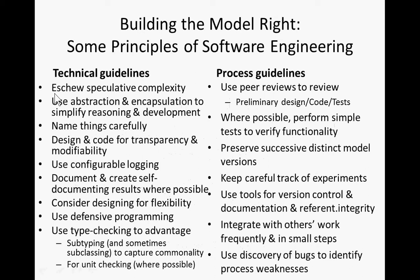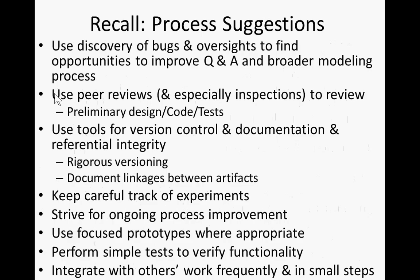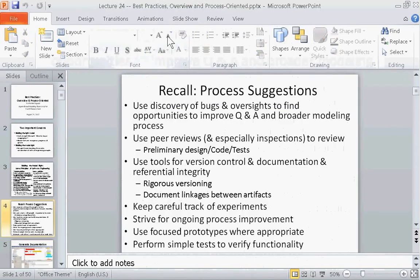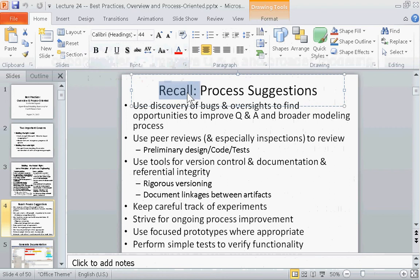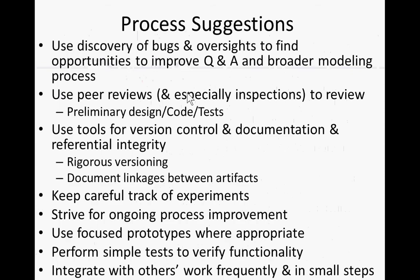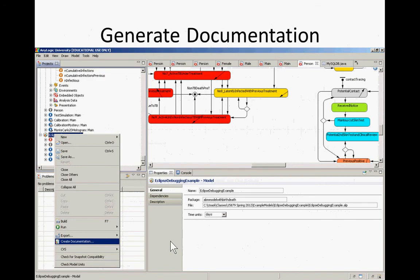Some of these things are things I've already mentioned — I'll go very light on those — but others may be new. Really, here we're dealing with process suggestions, and some of them are listed here: peer review, using tools for version control, keeping careful track of experiments, striving to improve your process over time not just your model, using focused prototypes where appropriate, and performing simple tests and integrating with other people's work frequently.